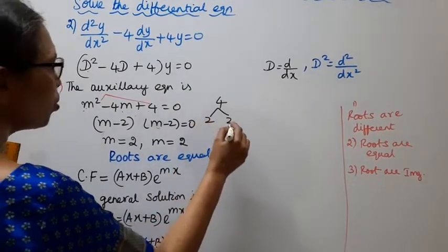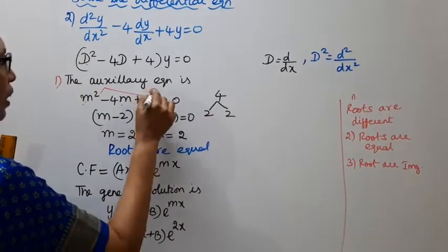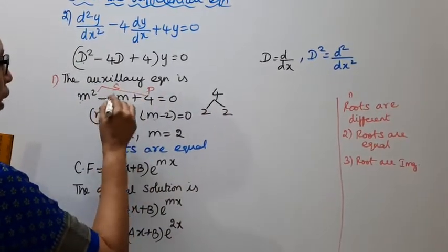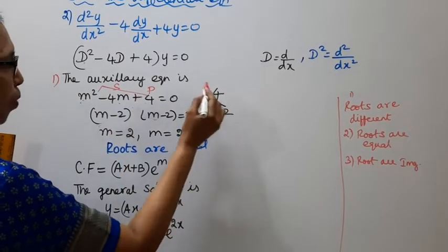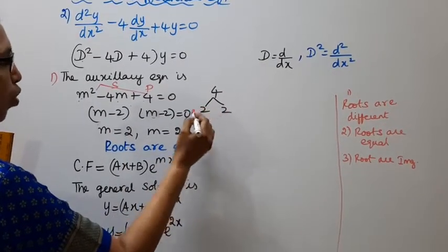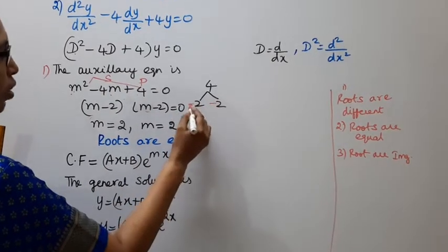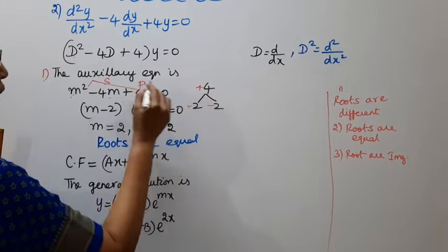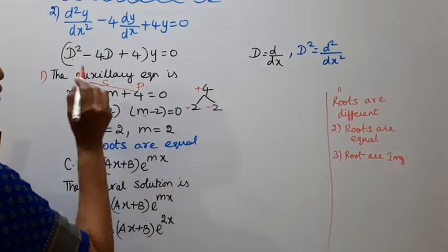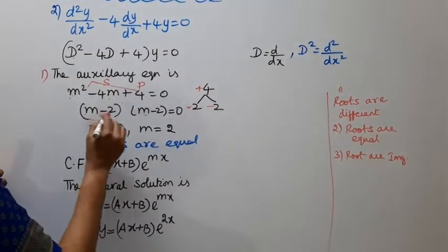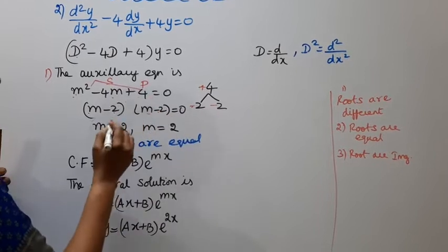1 times 4, 2 times 2 equals 4. The product is 4, the sum is -4. Product 4, sum -4. We need -2 and -2. So (m-2)(m-2) = 0.